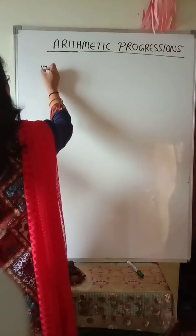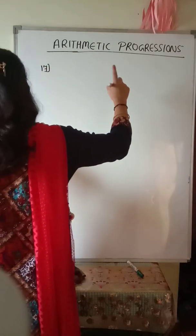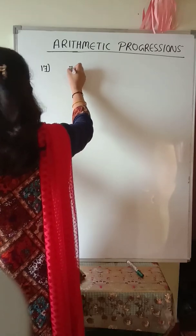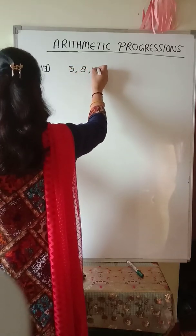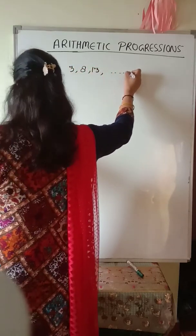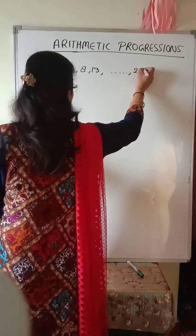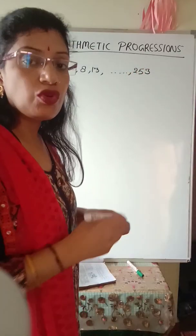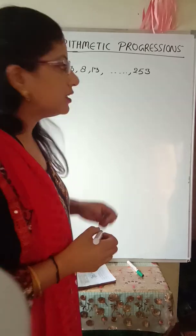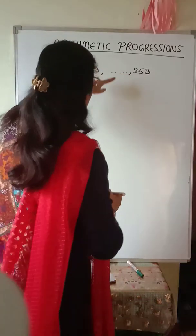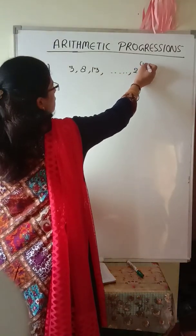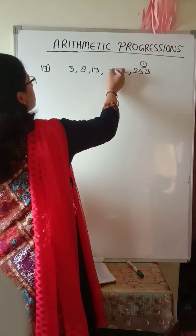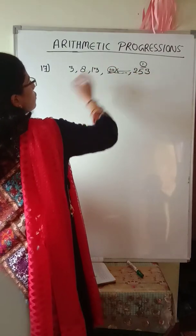Question number 17: Find the 20th term from the last of the AP 3, 8, 13, ... up to 253. We need to find the 20th term from the last, so we assume 253 is the first term and reverse the series.